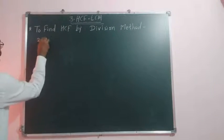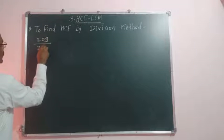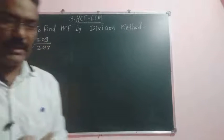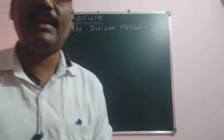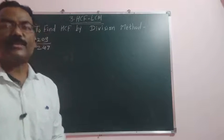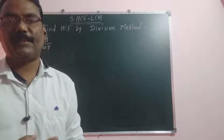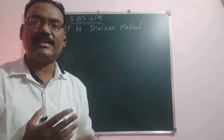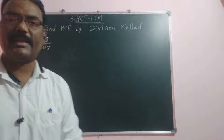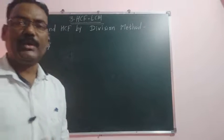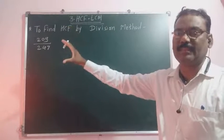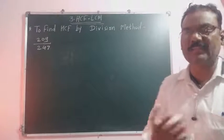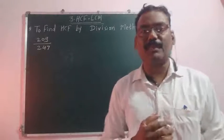Here we get 209 upon 247. Question is reduce to its simplest form. First find the HCF of given numbers and then after finding HCF divide both numbers by HCF.